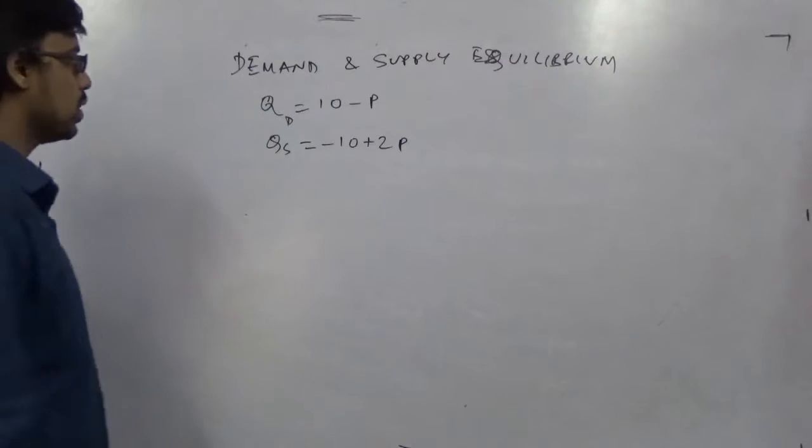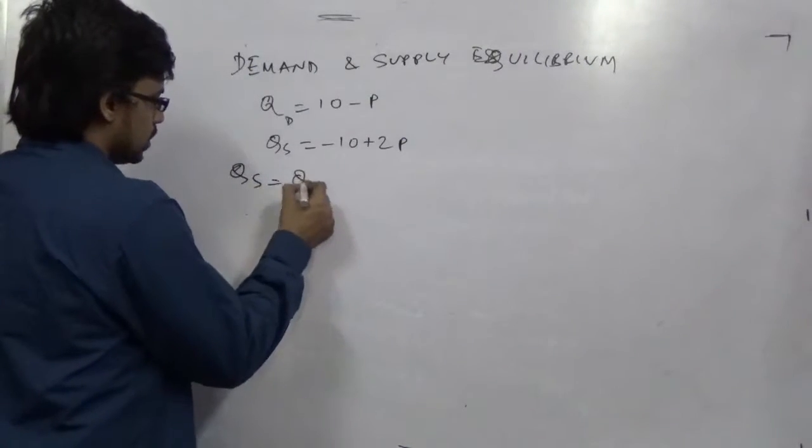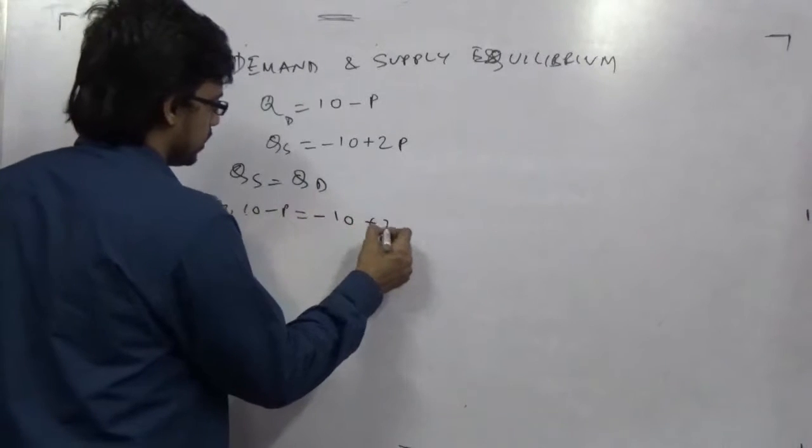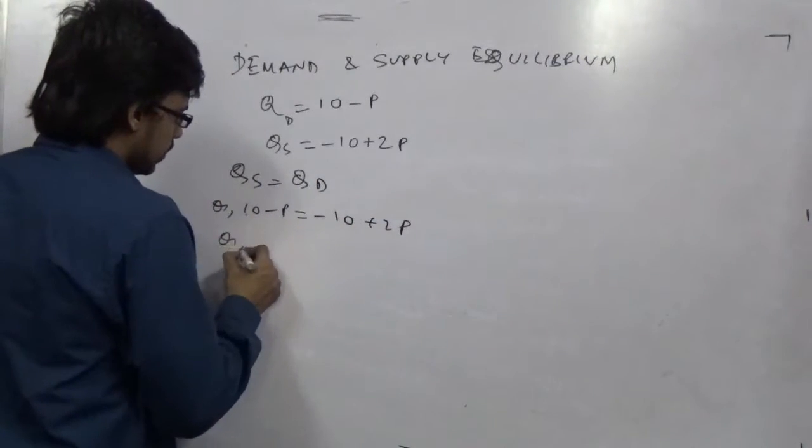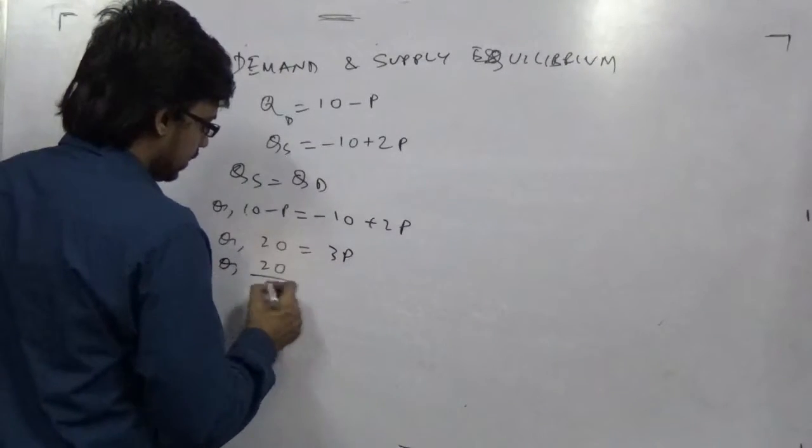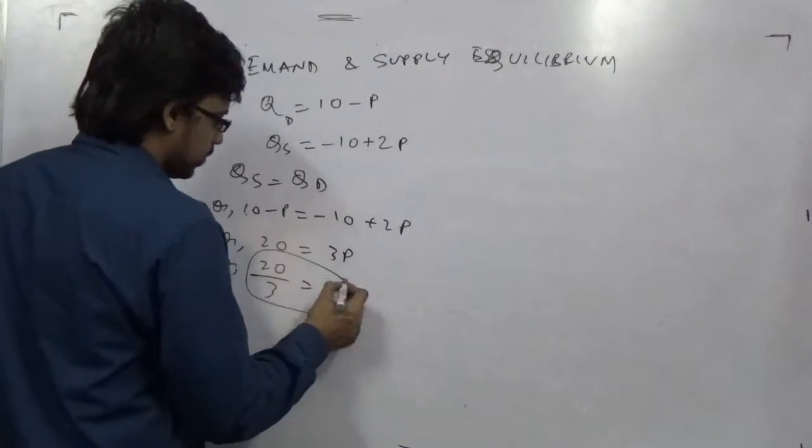What happens in a demand supply equilibrium is that qd equals qs. Solve it like 10 minus p equals minus 10 plus 2p. This will come here, so 20 equals 3p. p equals 20 by 3. This is your equilibrium price.